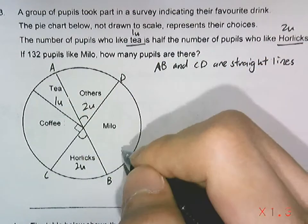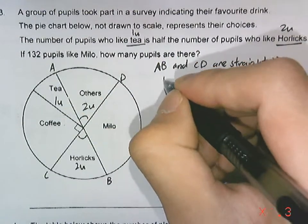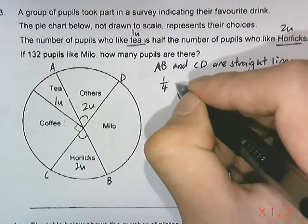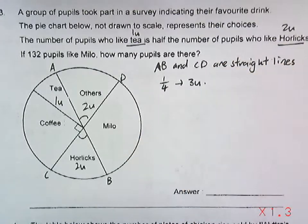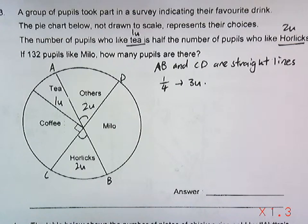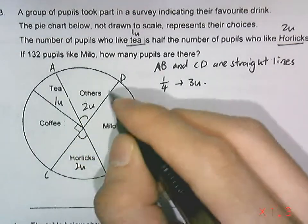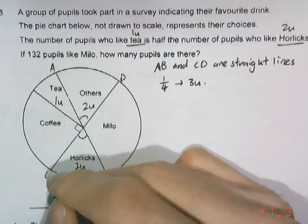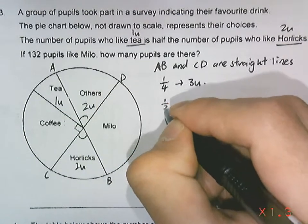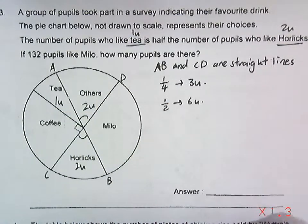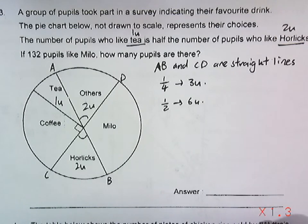So that accounts for one quarter of the total. One quarter of the total will represent three units. Since we got one quarter, we can find half of it by multiplying by two, so that will give us six units.